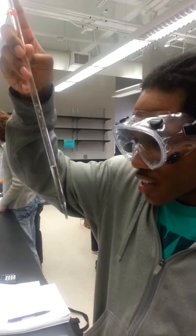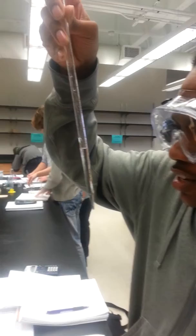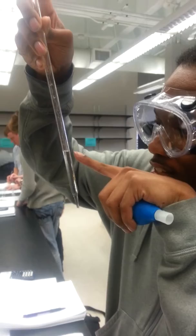And to take the volume, you have to read the bottom of the meniscus. For this volume, it must be around 7.7 milliliters for the initial volume.